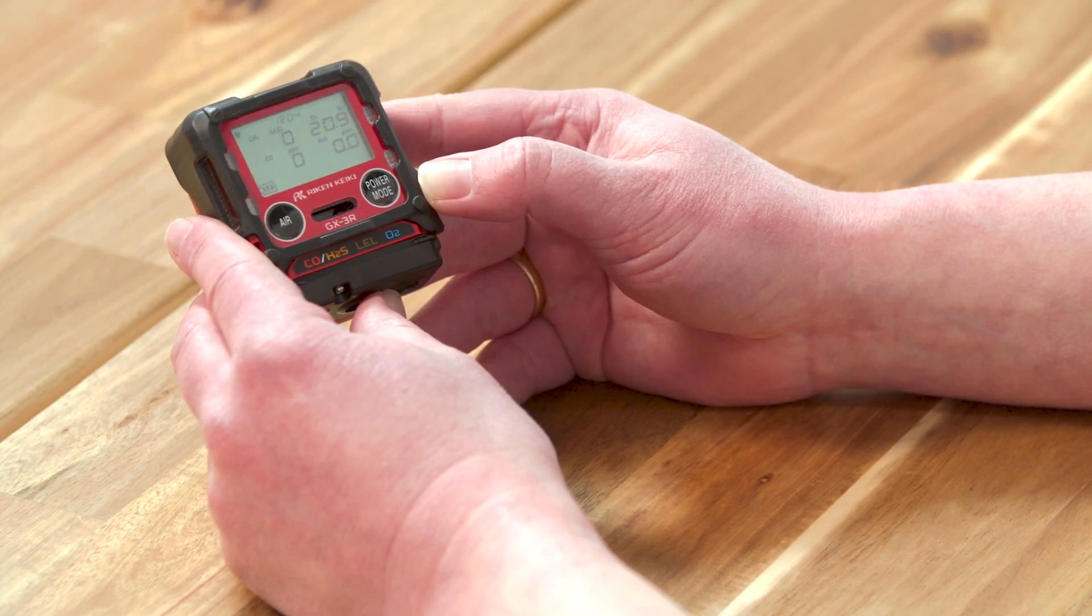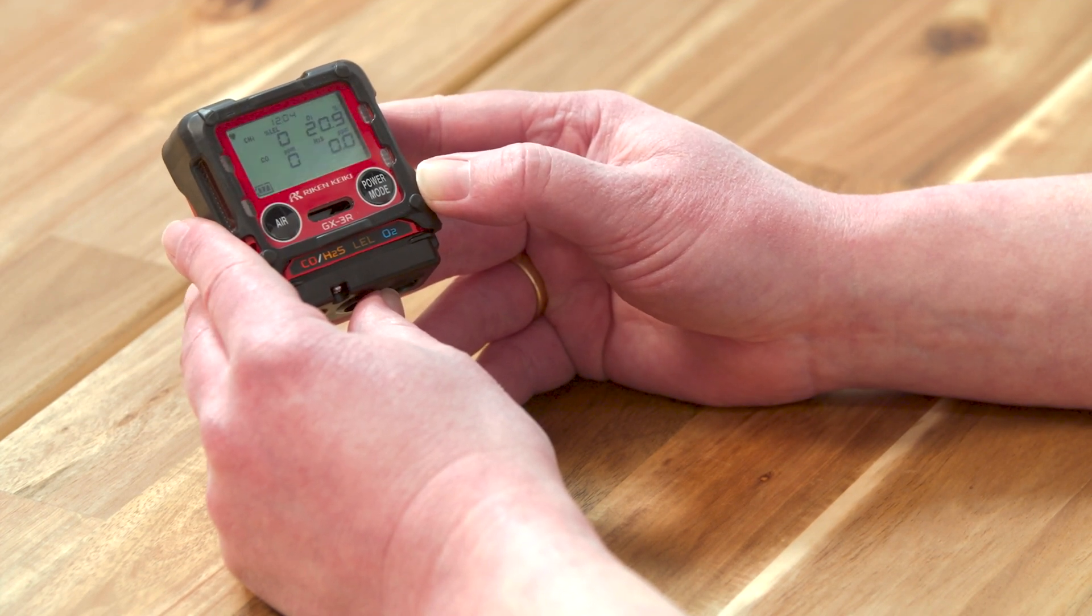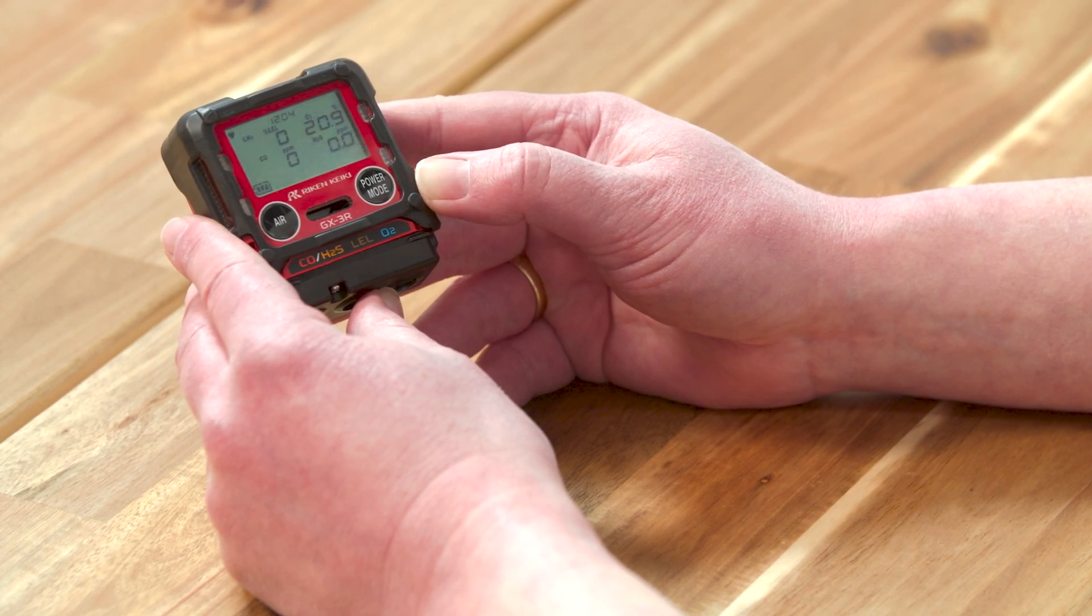The buzzer blips twice and then the measurement screen is displayed. Before the gas detector is ready for the detection of gases, first perform a fresh air calibration.